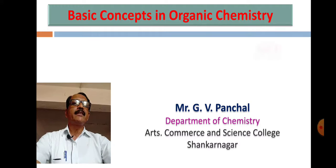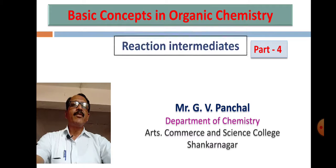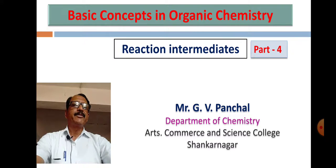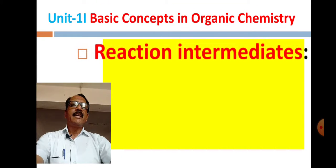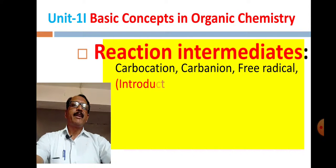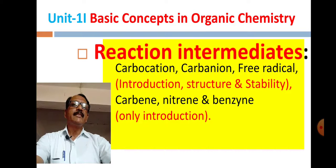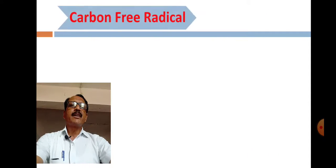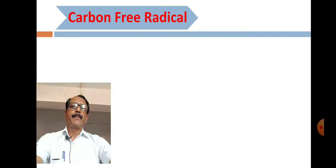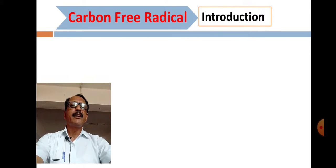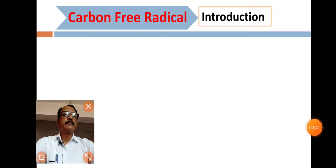In basic concepts in organic chemistry, we will discuss Part 4, which is again on reaction intermediates. Reaction intermediates include carbocation, carbanion, free radicals — with introduction, structure and stability — and also carbene, nitrene, and benzyne. Today we are going to discuss the carbon free radical.